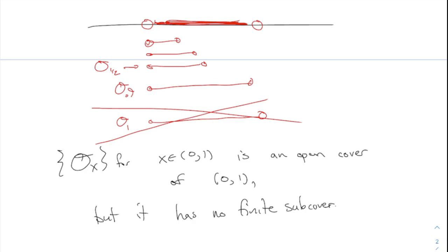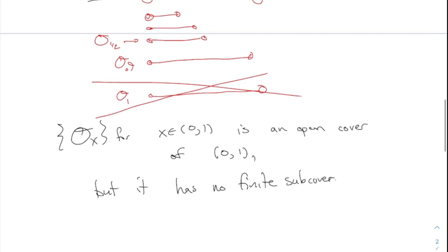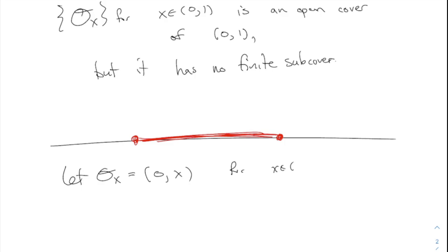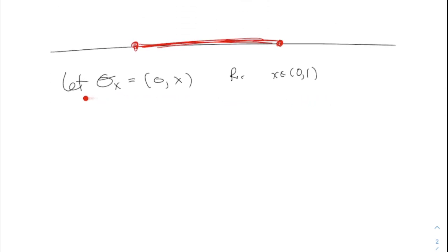You need infinitely many of them in order to cover the whole set; you cannot do it with only finitely many. What if it was a closed interval 0 to 1? Can I do the same thing? If I let O-X be (0, X) for X in the closed interval 0 to 1, these sets do not cover the whole thing — none of those sets include 0, and none includes 1. So this O-X is not an open cover.